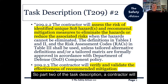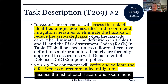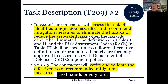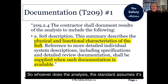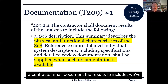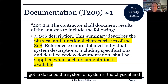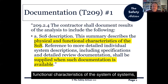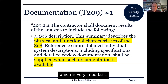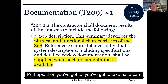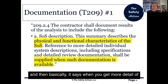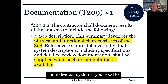Part two of the task description: the contractor will assess the risk of each hazard and recommend mitigation measures to eliminate the hazards. Whoever does the analysis — the standard assumes it's a contractor — shall document the results, including a description of the system of systems, the physical and functional characteristics of the system of systems. When you get more detail of the individual systems, you need to supply that when it becomes available.